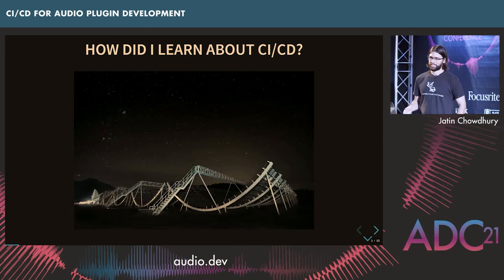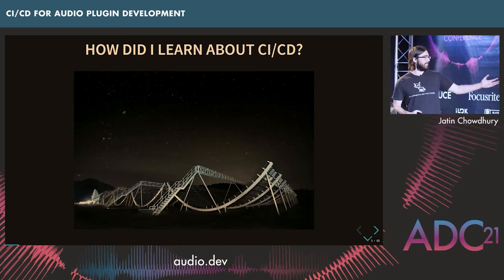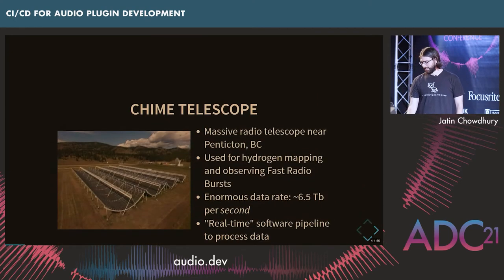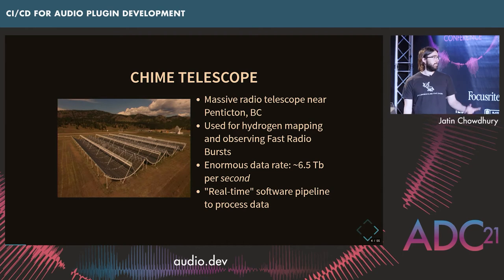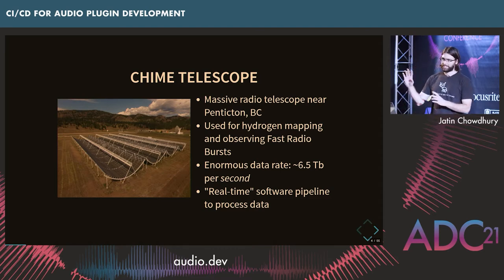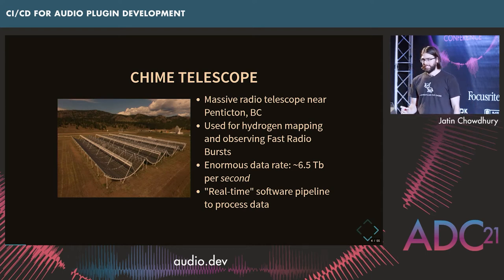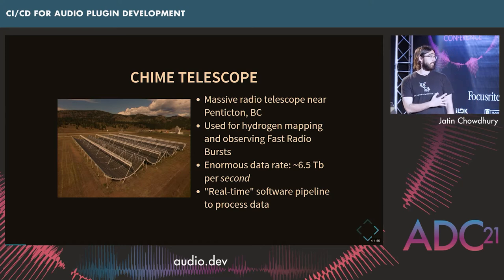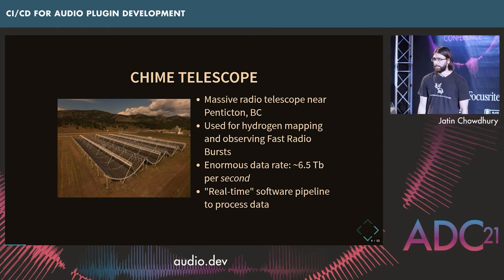First I wanted to talk about how I learned about CI and CD, and it actually has to do with this device here. This is a radio telescope near Penticton, British Columbia in Canada. It's used by astrophysicists and cosmologists for experiments trying to map the hydrogen content in the universe and to look for fast radio bursts, which are a very interesting phenomenon. From an engineering standpoint, this device is also a huge technical challenge because it has a raw data rate of about six and a half terabytes every second.